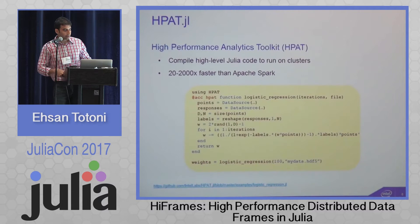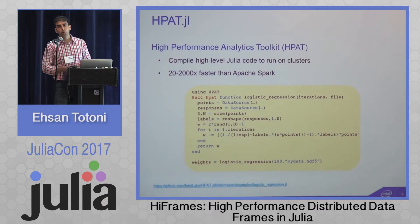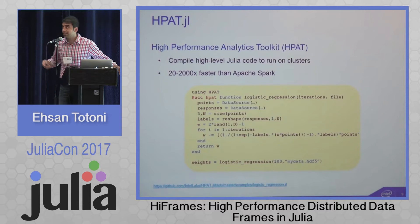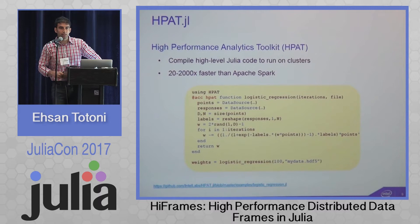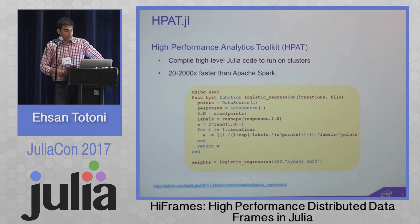HPAT stands for High Performance Analytics Toolkit, which compiles a subset of high-level Julia data-parallel operations — arrays and so on — to run on clusters automatically. We have performance comparisons showing 20 to 2,000 times faster than Apache Spark. For example, a logistic regression function decorated with @acc HPAT containing array, vector, and matrix operations is automatically parallelized for clusters.